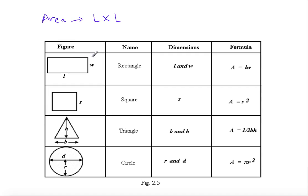We are going to see defined figures like rectangle, square, triangle, and circle. The area of a rectangle is length times width. The area of a square is side squared — that is, one side squared — because in a square, each side is equal to the others.